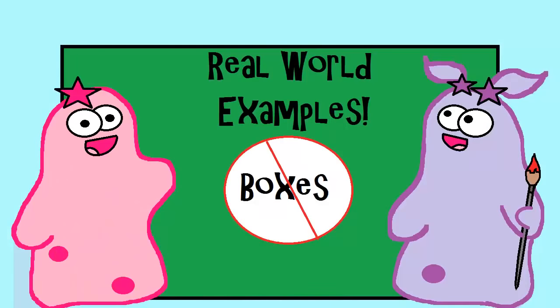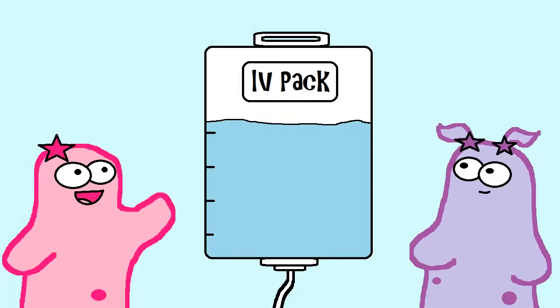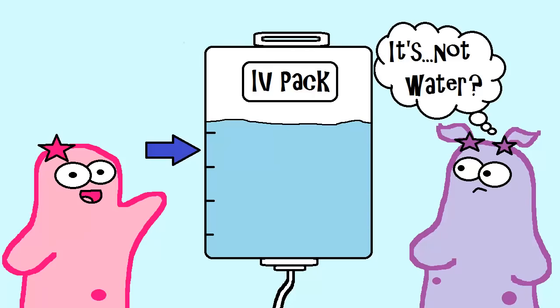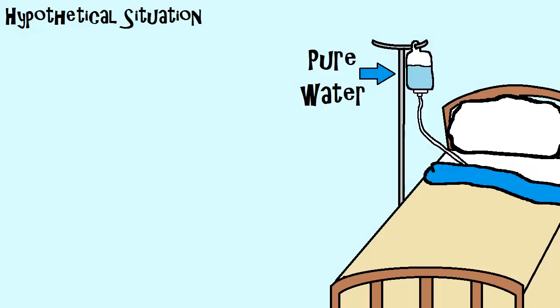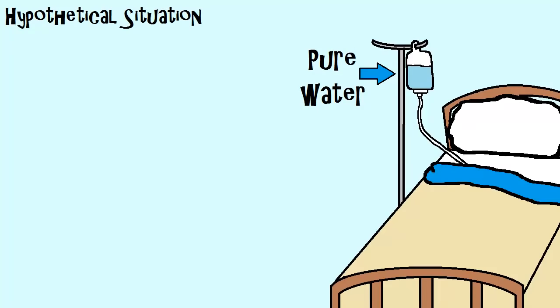So let's do some real-life examples now because this box thing is getting a little bit boring. When someone gets an IV in a hospital, it may look like the clear fluid running through the IV is water. But it is certainly not water. That would actually be a disaster because of osmosis. Let's say hypothetically there was pure water placed in an IV. Now an IV tube typically runs through a vein, so that you have access to your bloodstream.